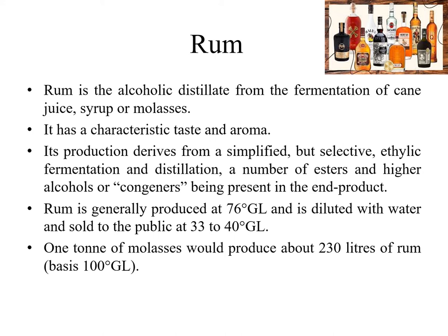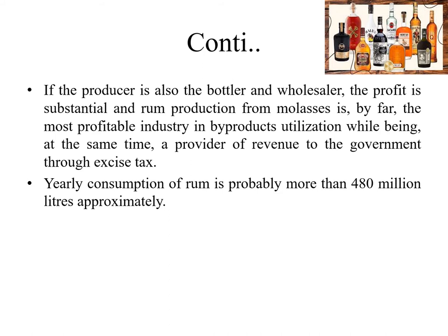Rum is generally produced at 76 degree GL and is diluted with water and sold to the public at 33 to 40 degree GL. One tonne of molasses would produce about 230 liters of rum at 100 degree GL. If the producer is also the bottler and wholesaler, the profit is substantial — rum production from molasses is by far the most profitable industry in by-product utilization, while also providing revenue to the government through excise tax. Yearly consumption of rum is probably more than 480 million liters.